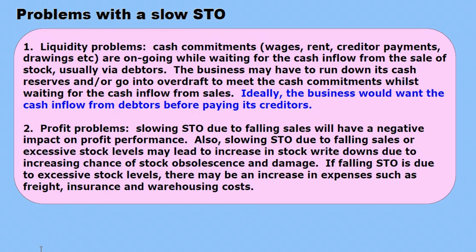If falling stock turnover is due to excessive stock levels, there may also be an increase in expenses such as freight on that excessive stock, insurance on that excessive stock, and increased warehousing costs associated with it. So, slowing stock turnover is usually associated with pressure on liquidity and also a downward pressure on profit.